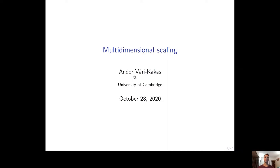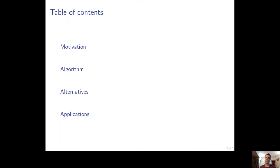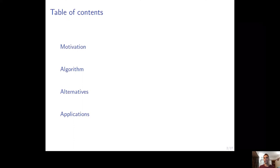Briefly, as a short introduction, multidimensional scaling is a way of visualizing data when we only know the pairwise distances between the items which we would like to visualize — we don't know their actual position and their actual attributes. I will give you some motivation and introduction to why you actually need this algorithm. Then we will talk about the linear algebra needed, followed by alternatives for imperfect cases, and then some nice applications.